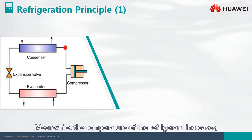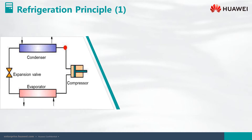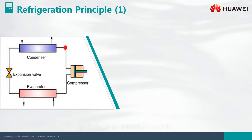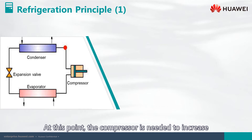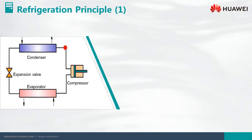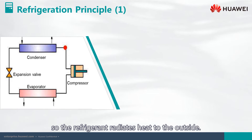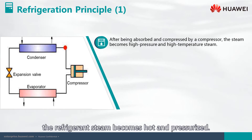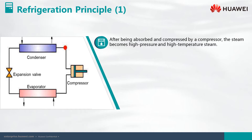Meanwhile, the temperature in the refrigerant increases, but is still relatively low. The heat absorbed into the refrigerant at relatively low temperature and pressure is difficult to transfer outside. At this point, the compressor is needed to increase the temperature and pressure of the refrigerant, so the refrigerant radiates heat to the outside. After being absorbed and compressed by the compressor, the refrigerant steam becomes hot and pressurized.